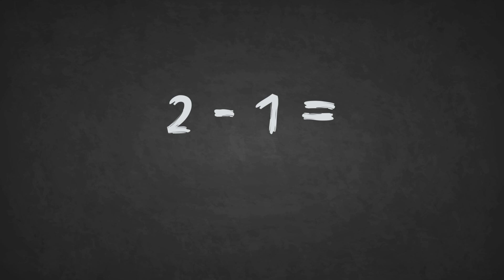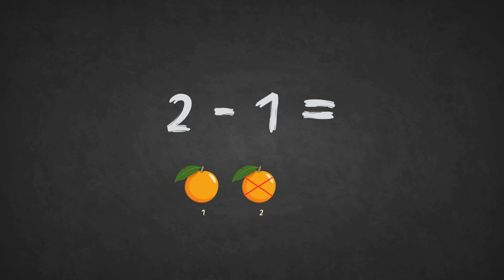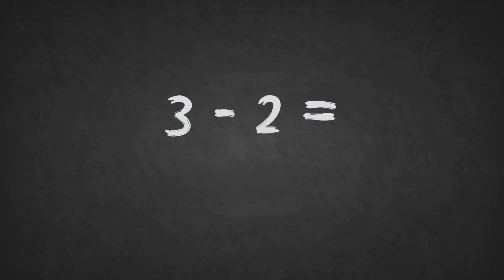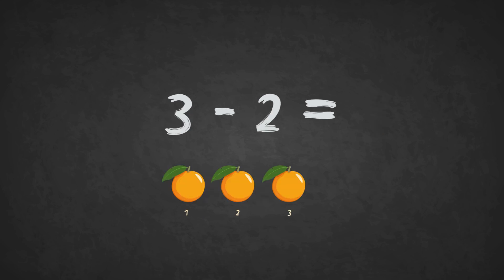2 minus 1 equals 1. The answer is 1. 3 minus 2 equals 1. The answer is 1.